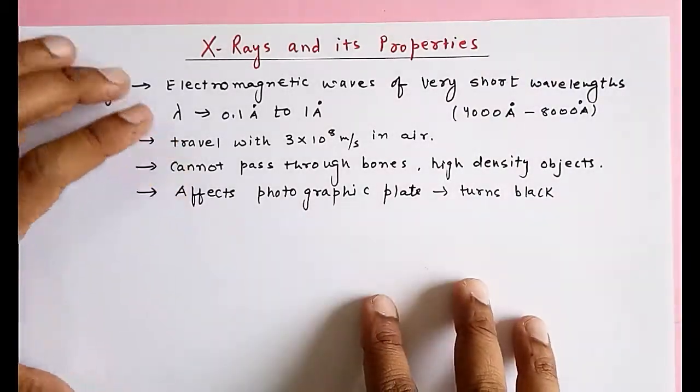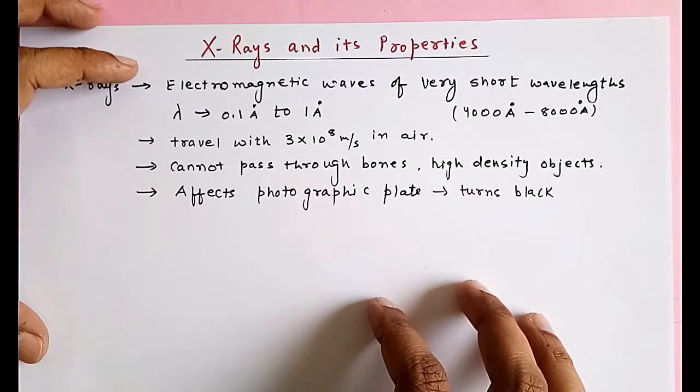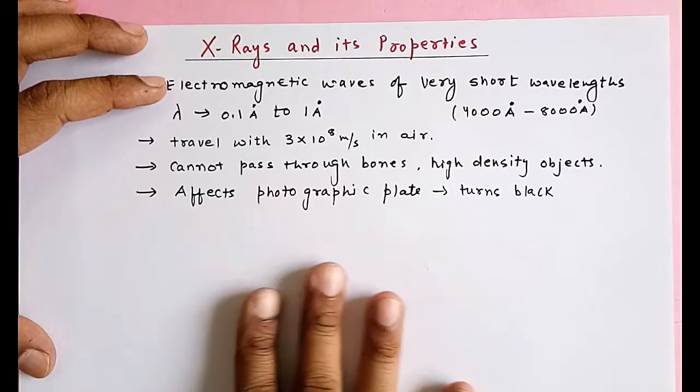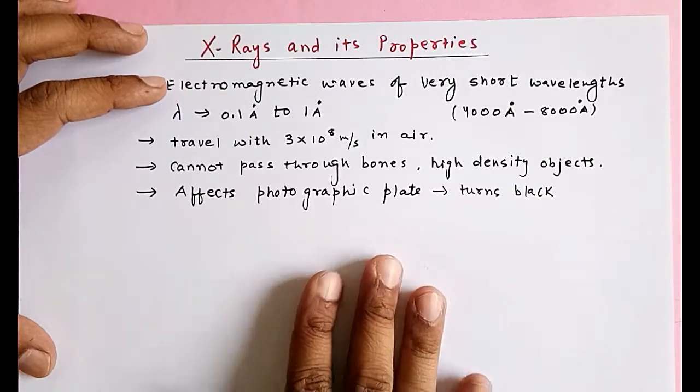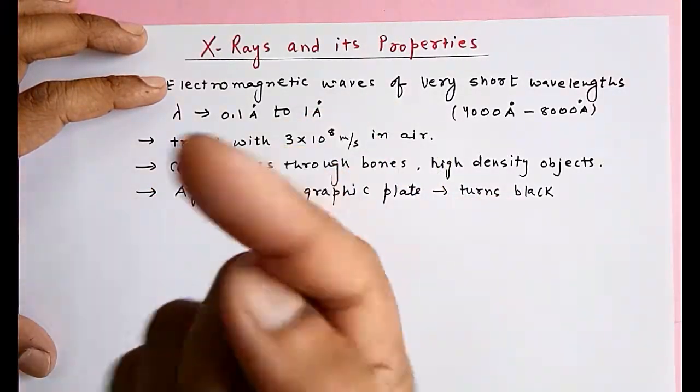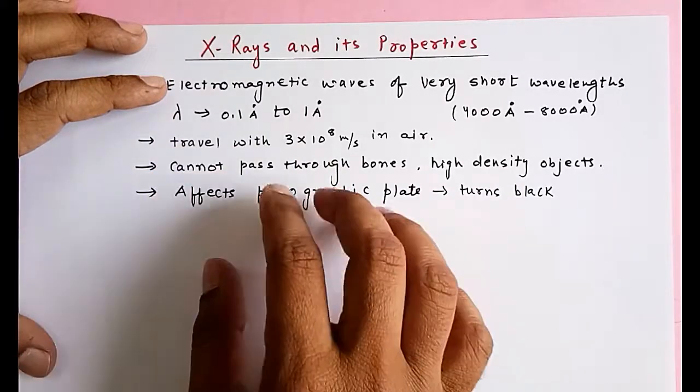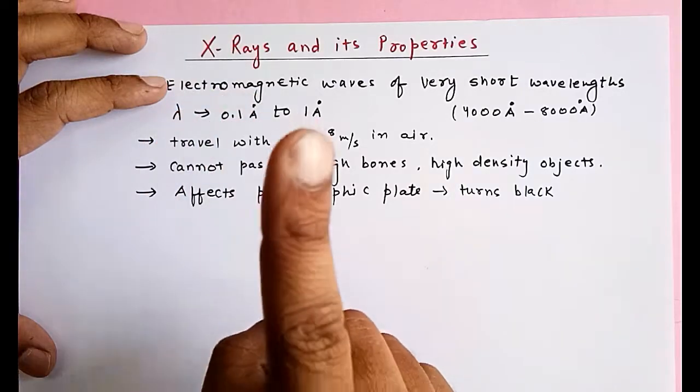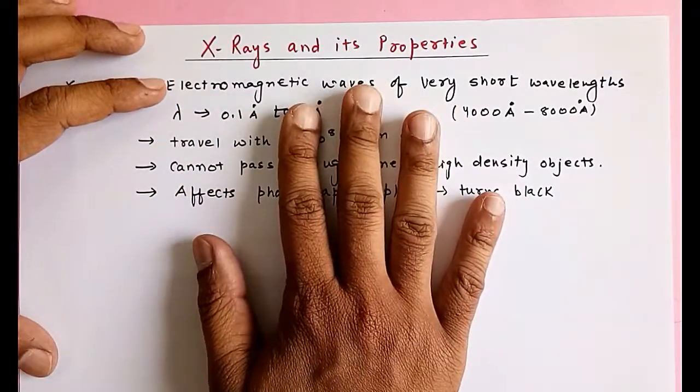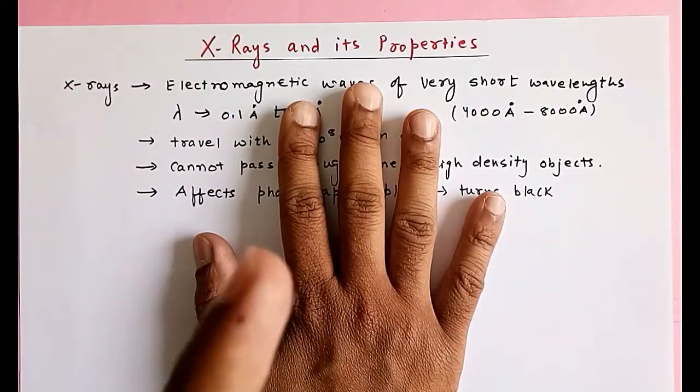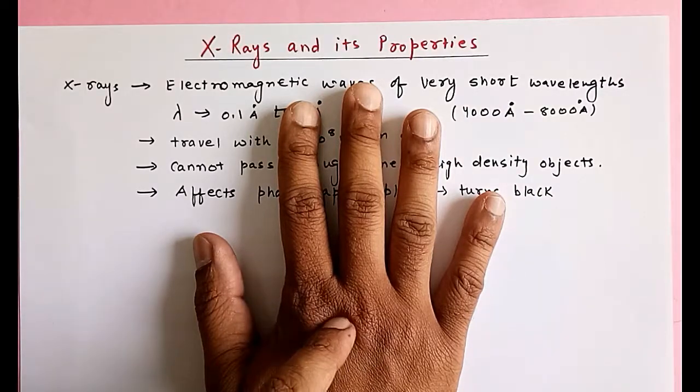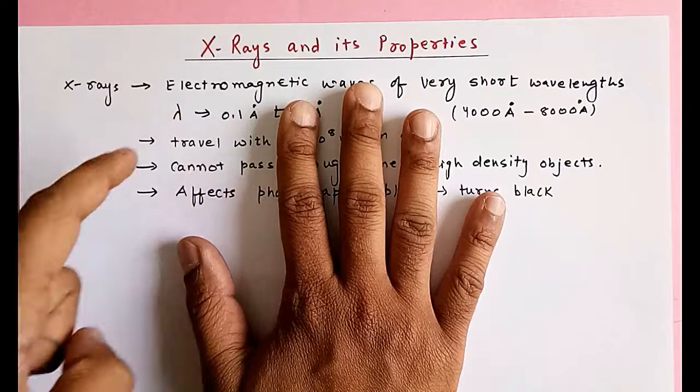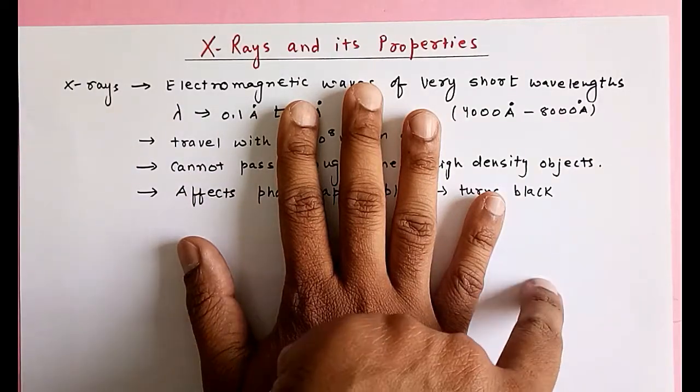In the same way, when we go to the doctor for bone checkup, the X-ray plate or photographic plate is just white like this. Assuming this phone is an X-ray machine and the X-rays fall like this on my hand, the X-rays cannot pass through my bones. They get absorbed inside my bones, and wherever the X-ray touches the photographic plate, the white color becomes black.